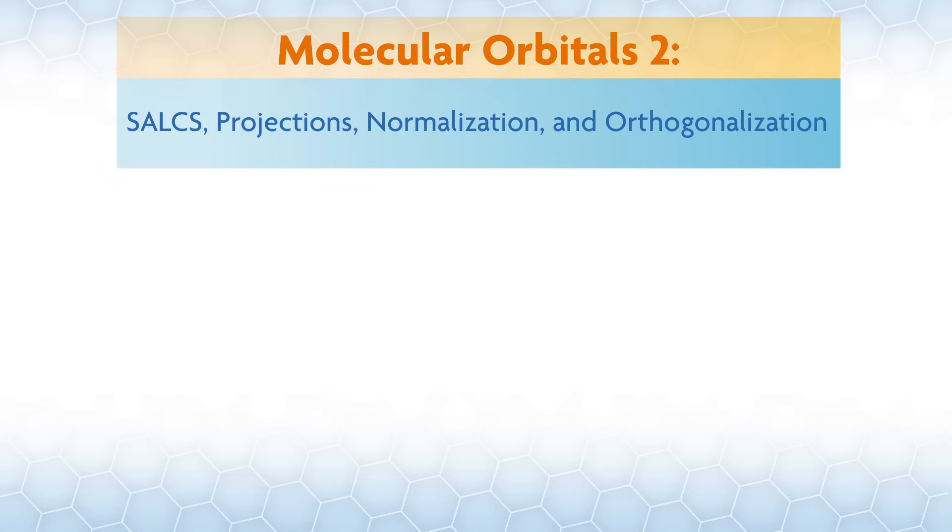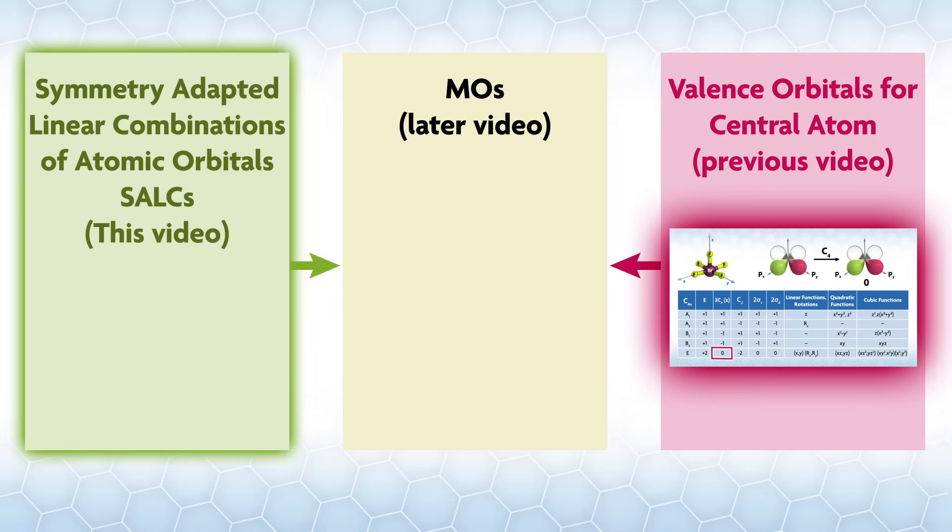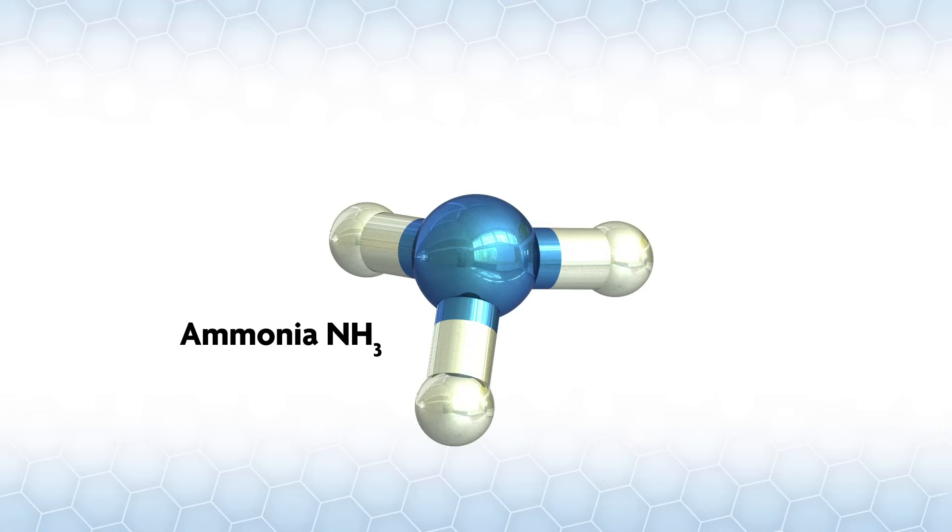In the first video in this series on molecular orbitals, we discussed representations and finding representations for the valence orbitals of a central atom. Here we will discuss symmetry-adapted linear combinations of atomic orbitals, or SALCs, which give us the other side of the MO diagram that will overlap with the orbitals of the central atom.